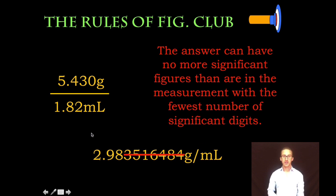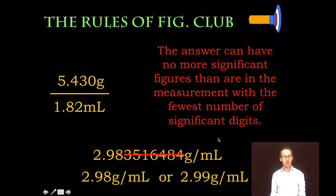So my final measurement should only have three significant figures. Again, watch your rounding. Is it 2.98 or 2.99? Answer: 2.98. That three isn't going to bump it up.